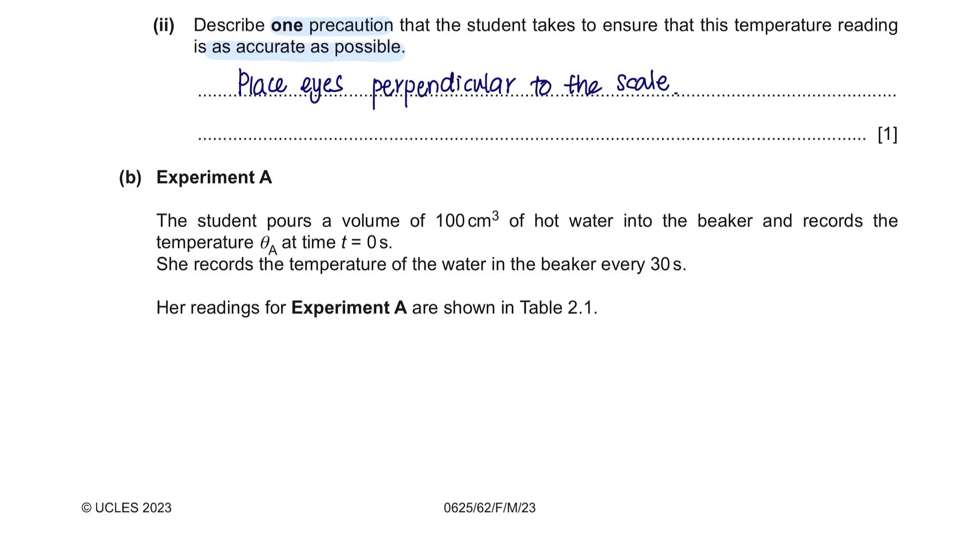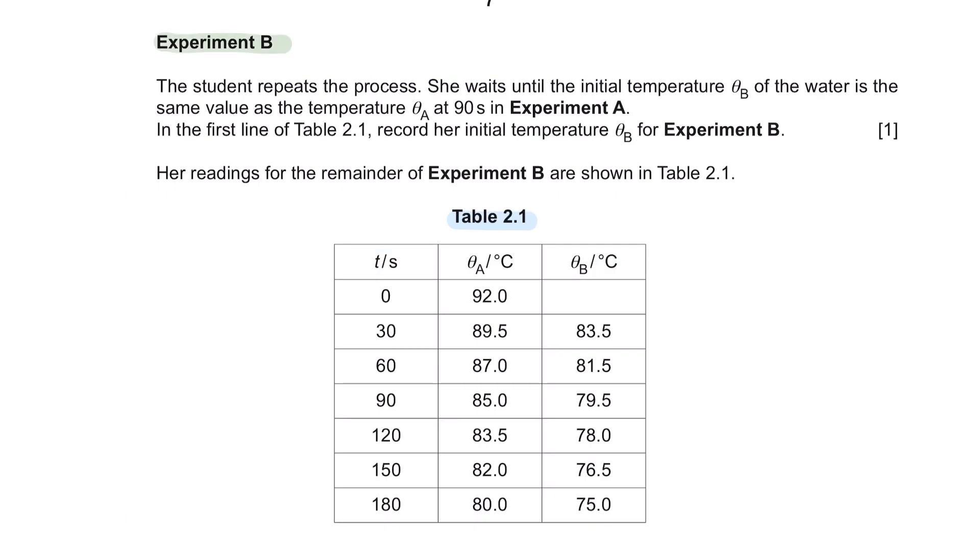Question B, experiment A. The student pours a volume of 100 cm³ of hot water into the beaker and records the temperature, theta A, at time 0 seconds. She records the temperature of the water in the beaker every 30 seconds. Her readings for experiment A are shown in table 2.1. Experiment B, the student repeats the process. She waits until the initial temperature, theta B, of the water is the same value as the temperature, theta A, at 90 seconds in experiment A. In the first line of table 2.1, record her initial temperature of theta B for experiment B. Since the temperature of experiment A at 90 seconds is same with experiment B at 0 seconds, the value here would be 85.0.